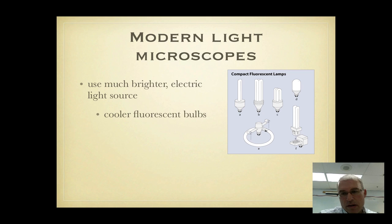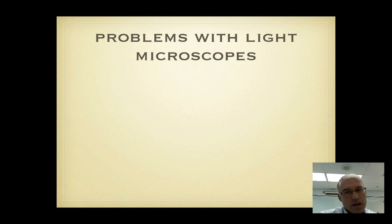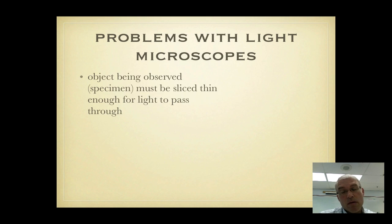Modern light microscopes use cooler lights that are also brighter and obviously they're powered by electricity today, mostly fluorescent type tubes like in the microscopes we're going to be using in the class. And they also have multiple magnifications which makes them compound microscopes. You can pick whether you're using low power or high power.